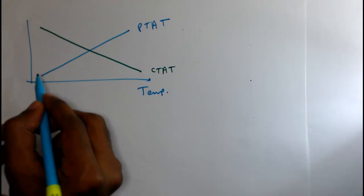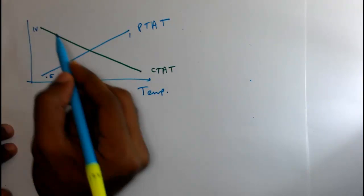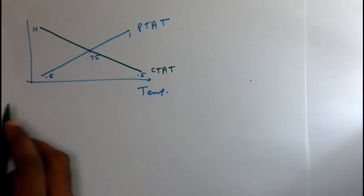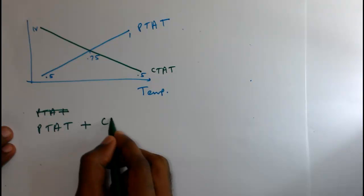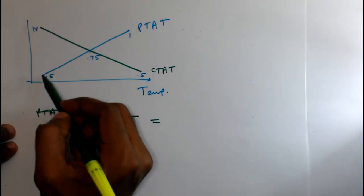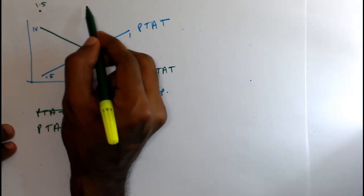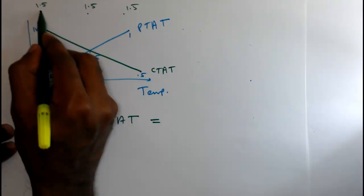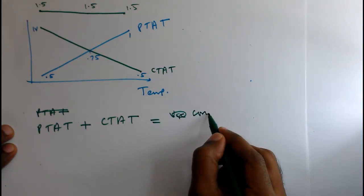For example, giving some values: suppose the CTAT voltage goes from 1 volt to 0.5 volt, and the PTAT voltage goes from 0.5 volt to 1 volt — with both being 0.75 volt at the midpoint. If I add the PTAT and the CTAT together — here 1 plus 0.5 gives 1.5, here 0.5 plus 0.5 also gives 1.5, and again 1 plus 0.5 gives 1.5 — joining these points we will get a constant voltage.